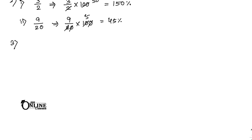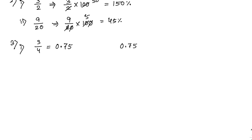First one: 3 by 4. Convert to decimal: 0.75. Now convert this decimal to percentage: 0.75 into 100 equals 75 percent.